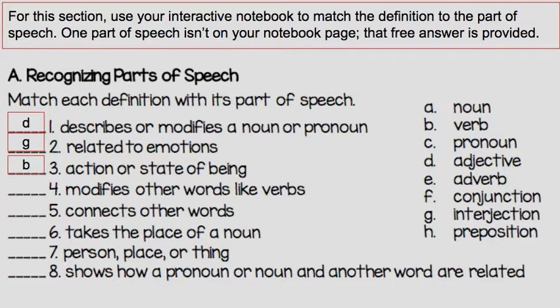Number four: modifies other words like verbs. That is E, adverb. Number five: connects other words. That's F, a conjunction. Number six: takes the place of a noun. A pronoun takes the place of a noun. Number seven: person, place, or thing. That's a noun, A.